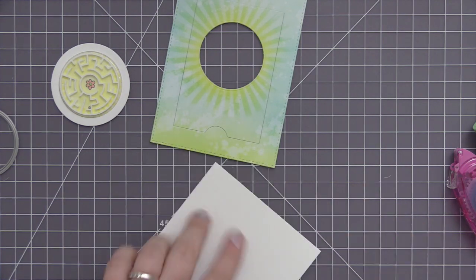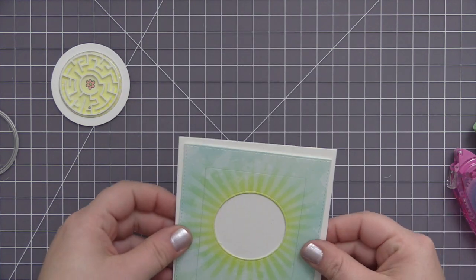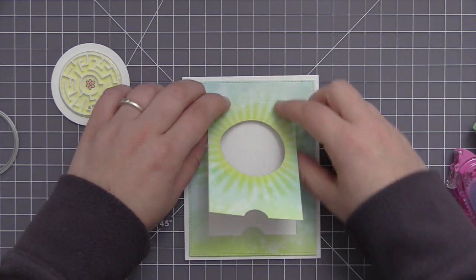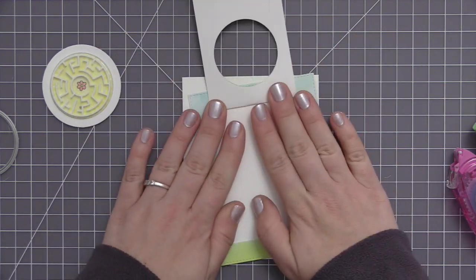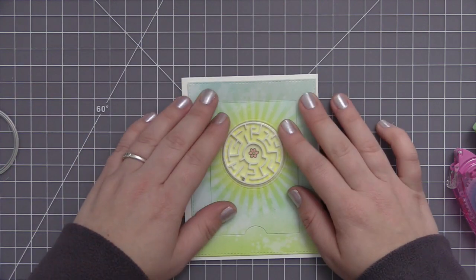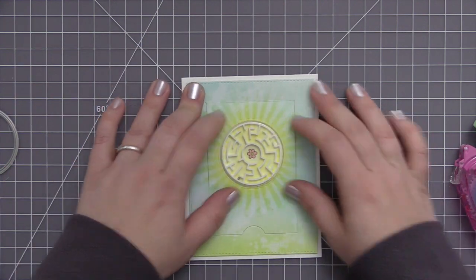So now we can go ahead and start to assemble the card and put all these components together. I've taken a white top folding card base, this is four and a quarter by five and a half inches when it's closed, which is a standard A2 size card. Now I'm going to figure out where everything needs to be positioned so that I can start to adhere everything down.